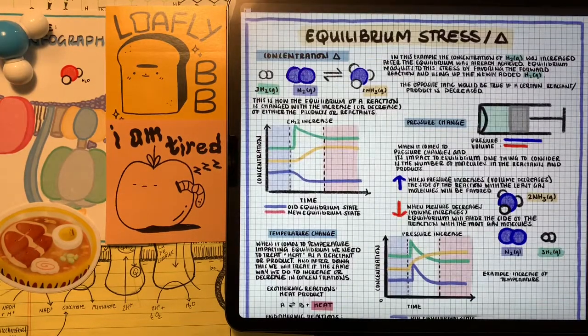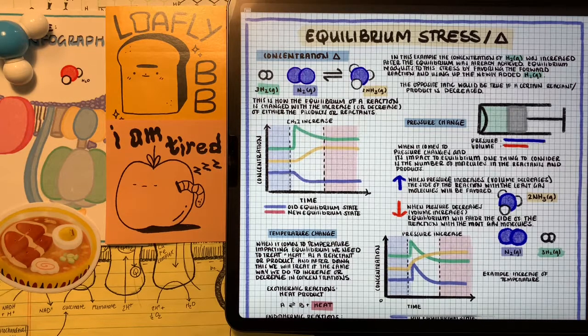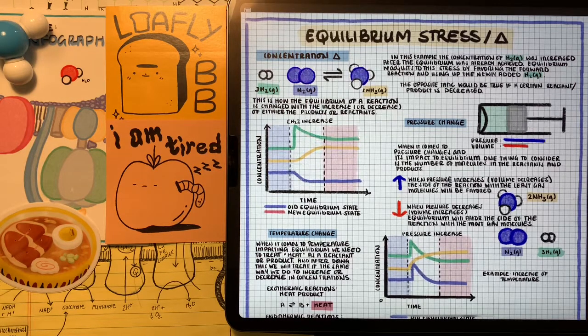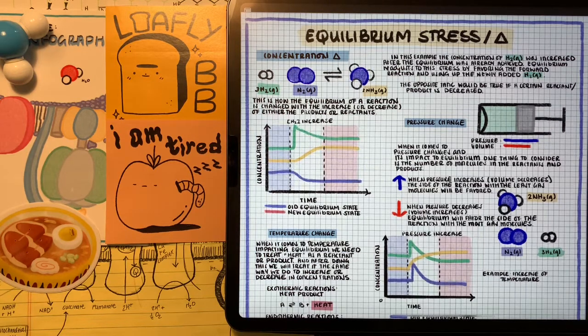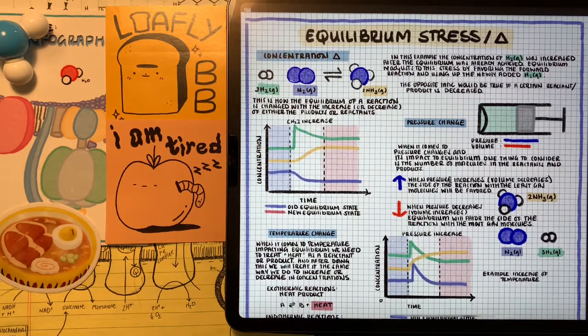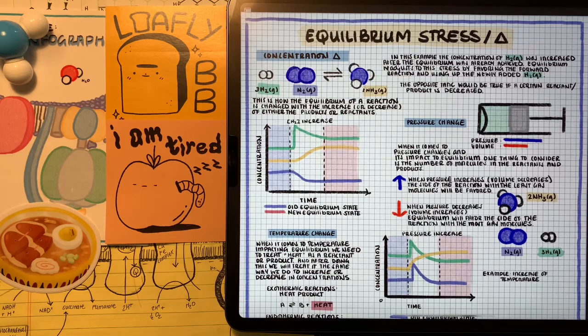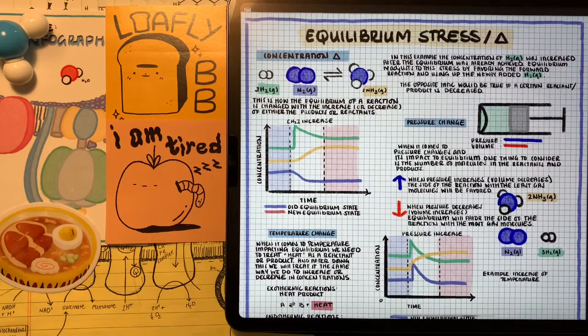For the last part, let's talk about temperature change on a system that's already at equilibrium. Now, at first, this one probably seems like the hardest one to understand and influence for Le Chatelier's principle. But we just got to focus on whether or not the reaction is exothermic or endothermic. If the reaction is exothermic, then we have to treat heat as a product. And if the reaction is endothermic, then we're going to treat heat as a reactant.